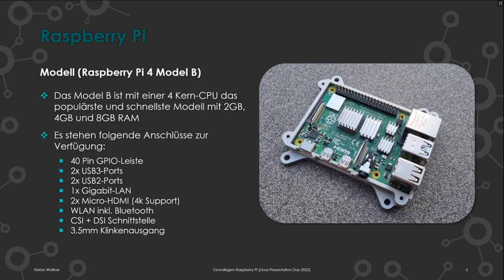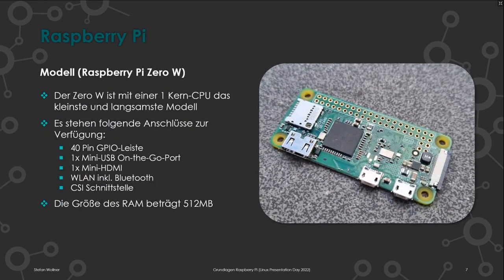Das ist der bekannteste Pi. Er ist im Kreditkartenformat. Es gibt aber auch ein kleineres Modell: den Raspberry Pi Zero W – das W steht für Wireless. Dieser kleine Zwerg hat einen Einzel-Kern-Prozessor, 512 MB RAM und ebenfalls die 40-polige GPIO-Leiste. Er hat einen Mini-USB-On-The-Go-Port – man kann dort einen Hub anschließen und dann Tastatur und Maus anbinden. Als Bildschirmausgang hat er Mini-HDMI.